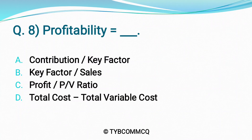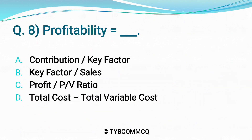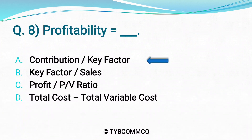Question No. 8: Profitability is equal to ___. Option A: Contribution divided by Key Factor. Option B: Key Factor divided by Sales. Option C: Profit divided by PV Ratio. Option D: Total Cost minus Total Variable Cost. The correct option is Option A — Contribution divided by Key Factor.